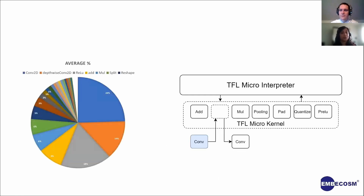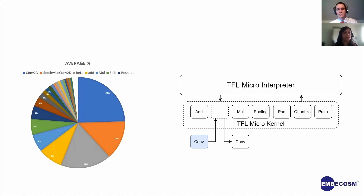In the next slide we show the frequency of occurrence of operations in the neural network software. Some of the neural network operations are complicated, such as convolutions, and to simplify the software design process these were split down into simpler functions. These simpler functions are then implemented in vector assembly, allowing the more complex parts of the operation to be designed in C.